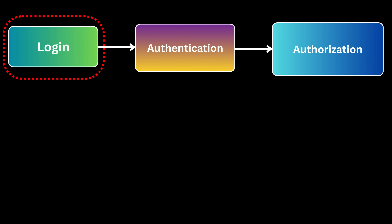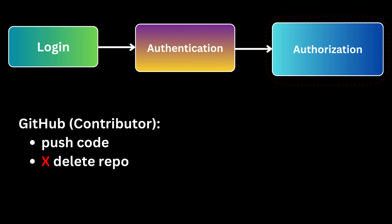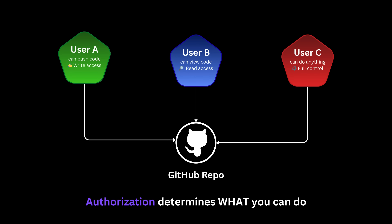When you log into a system, authentication verifies your identity — the system knows who you are. But that's not enough. Just because you're logged in doesn't mean you can do everything. In GitHub, a contributor might be able to push code but not delete the repo. In Google Docs, one person can edit while another can only view. That's authorization: deciding what resources or actions are allowed. Different users have different levels of control — that's authorization in practice.